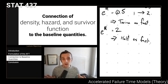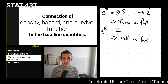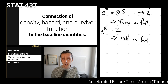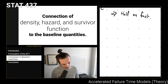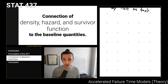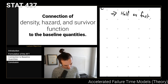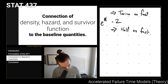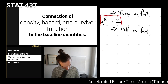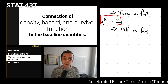That's why we call this an accelerated failure time model — the way covariates have an impact is by accelerating or decelerating the failure time, speeding it up or slowing it down. Being able to interpret based on these values of e^eta is a useful skill to have.